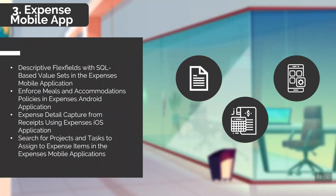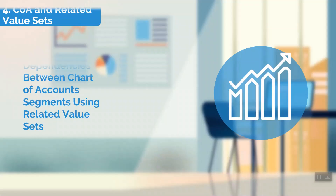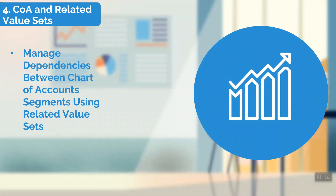Managing discrepancies between chart of account segments using related value sets. Related value sets provide a new way to define dependencies between two segments in a chart of accounts to ensure only valid combinations are used during data entry. Users can now define these relationships immediately for new or existing chart of accounts. If you use cross-validation rules to validate values for a segment based on another segment, you may consider converting them to related value set rules to improve journal processing performance and potentially reduce the need for defining a huge number of cross-validation rules.